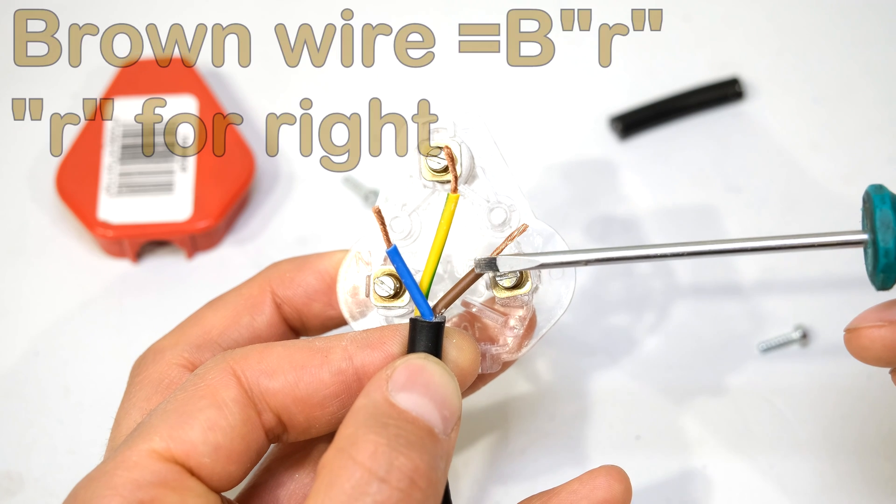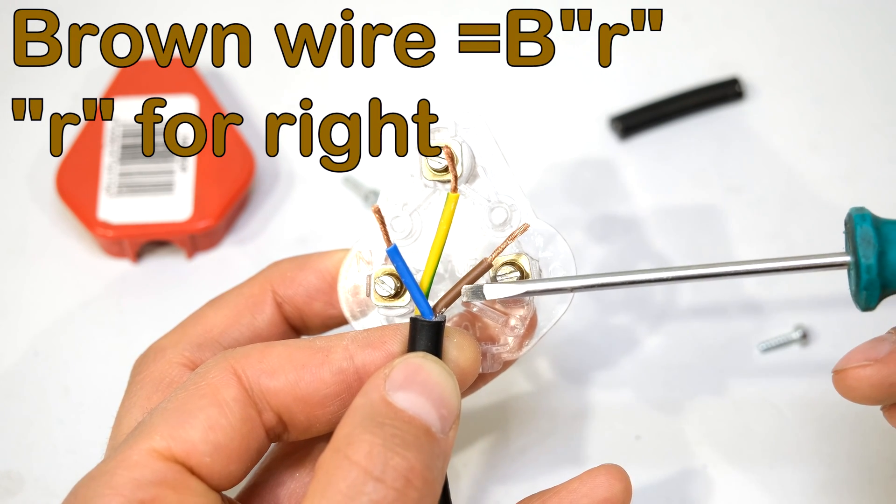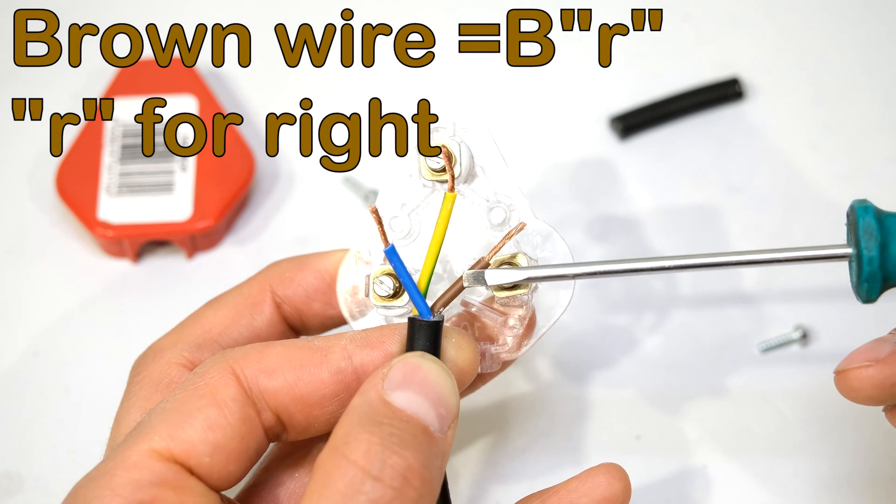Right, now the brown wire, that's the live wire. The brown wire goes to the right. Listen to the word. Brown, B-R, R for right.